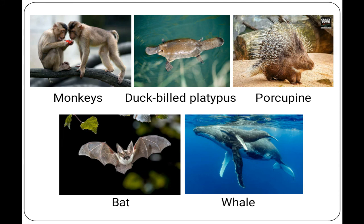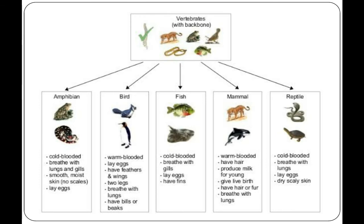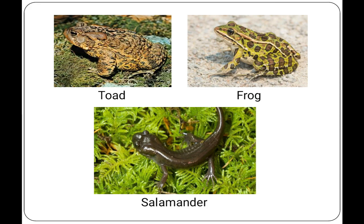The last group is amphibians. Amphibians are cold-blooded vertebrates which can live both on land and in water. They usually spend part of their life cycle in water and return to the water to lay eggs. They usually have loose and moist skin. Examples of amphibians include frog, salamander, etc.